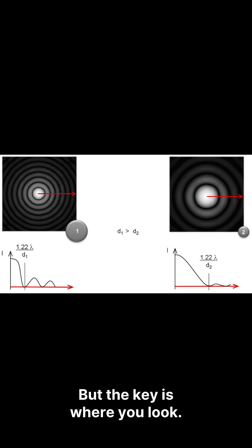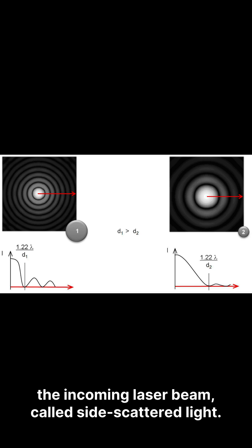If everything is randomly jiggling and scattering, you'd expect polarization to get washed out. But the key is where you look. The reported effect shows up perpendicular to the incoming laser beam, called side-scattered light.